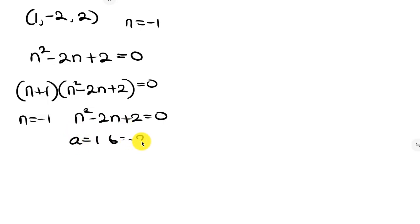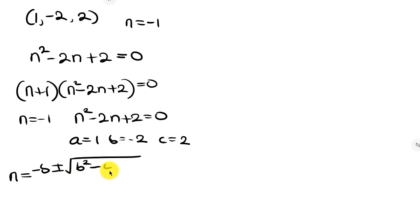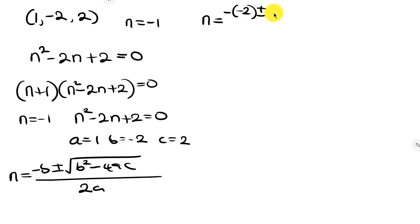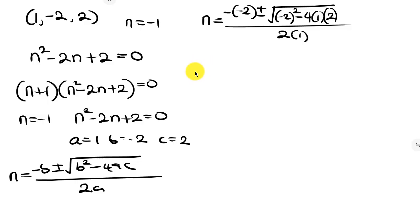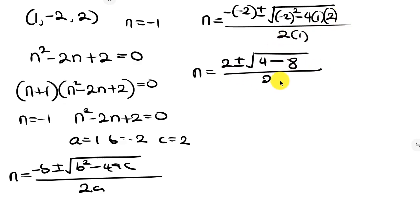For the quadratic formula, a = 1, b = -2, and c = 2. The formula gives n = negative b plus or minus the square root of b squared minus 4ac, all over 2a. Substituting: n = 2 plus or minus the square root of negative 2 squared minus 4 times 1 times 2, all over 2 times 1.